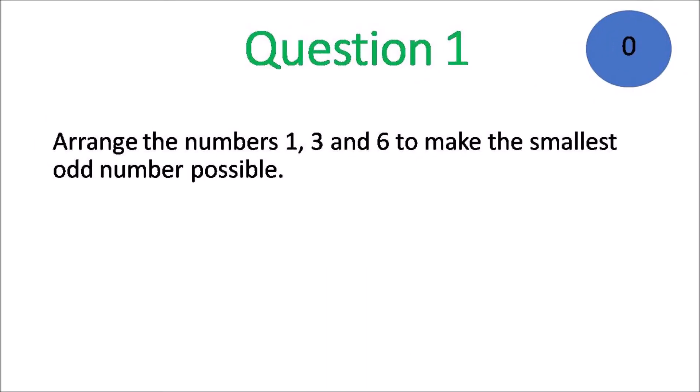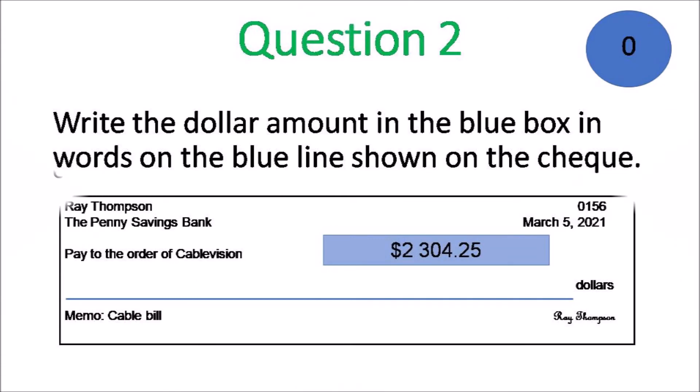Question 1. Arrange the numbers 1, 3 and 6 to make the smallest odd number possible. Let's go Grade 6. The timer is off and running. You have to beat it. Remember we want the smallest odd number possible.